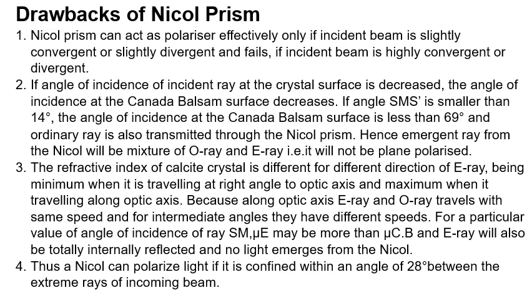The first drawback of Nicol prism: the Nicol prism can act as a polarizer effectively only if the incident beam is slightly convergent or slightly divergent. It fails if the incident beam is highly convergent or highly divergent.